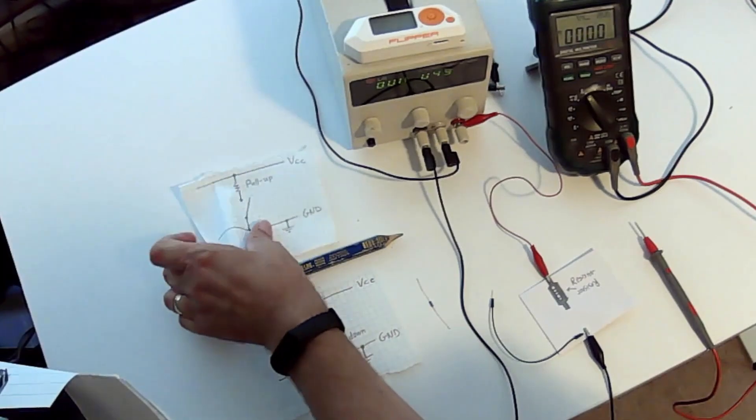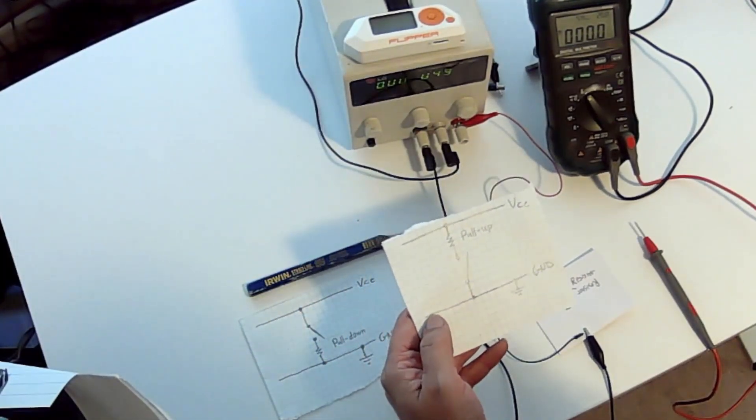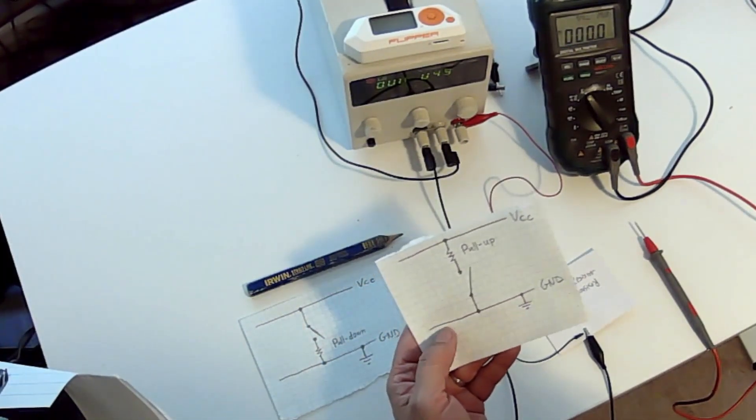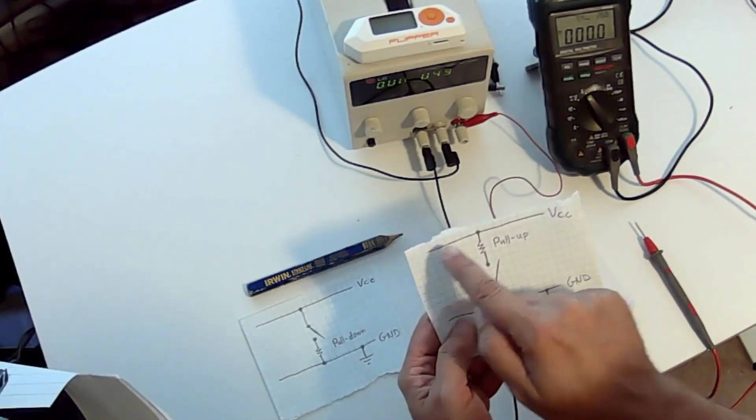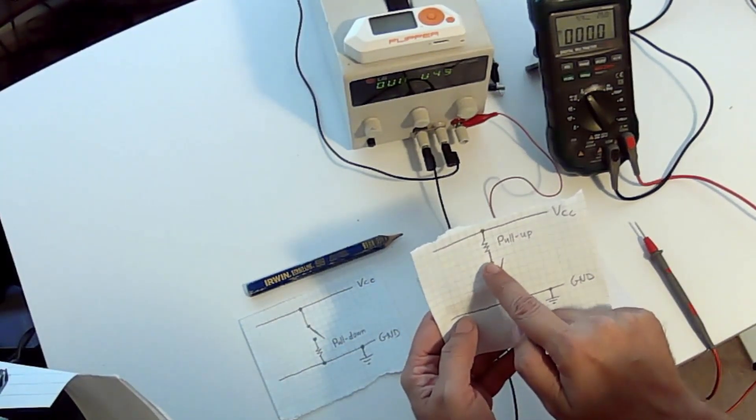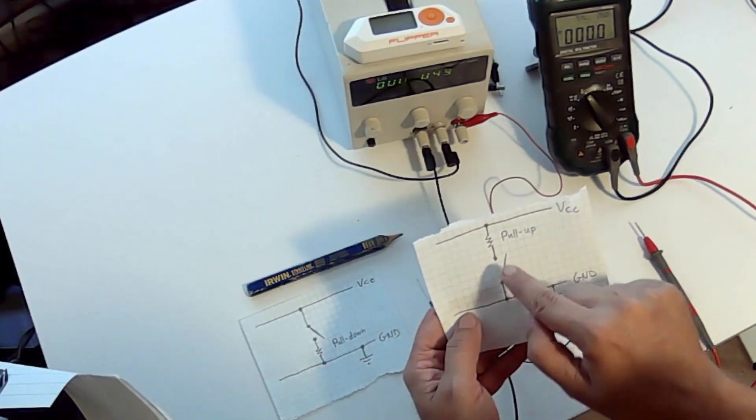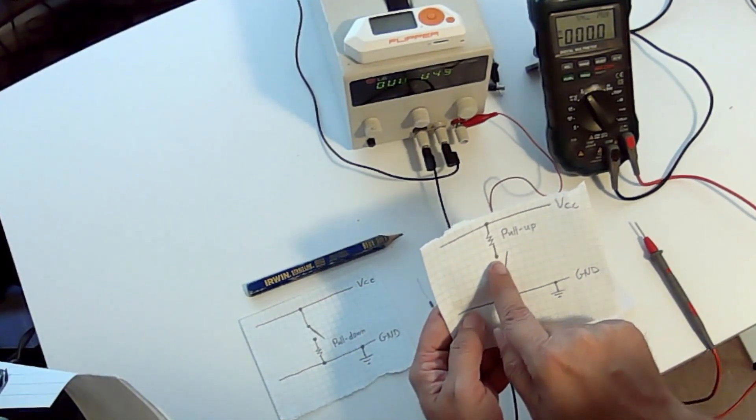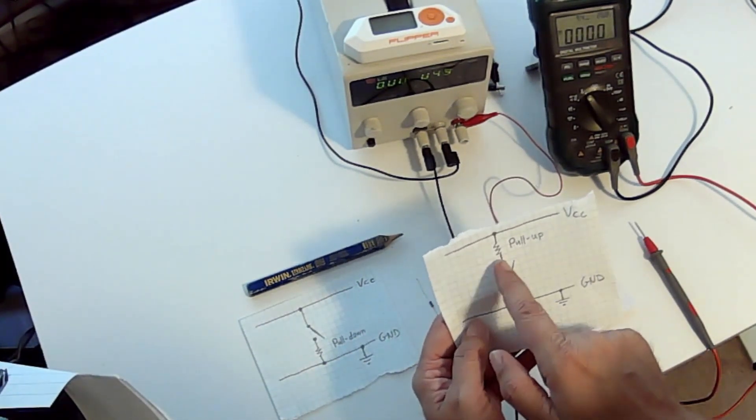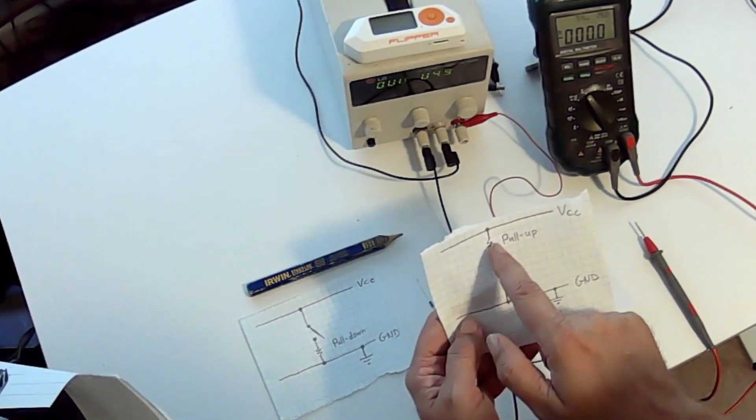So first I wanted to talk about the pull-up resistor. Basically what happens in the pull-up is we have our VCC and we connect a resistor to our VCC. And we're measuring this voltage right here at this point. And that's gonna be the same as our VCC going through this pull-up resistor.